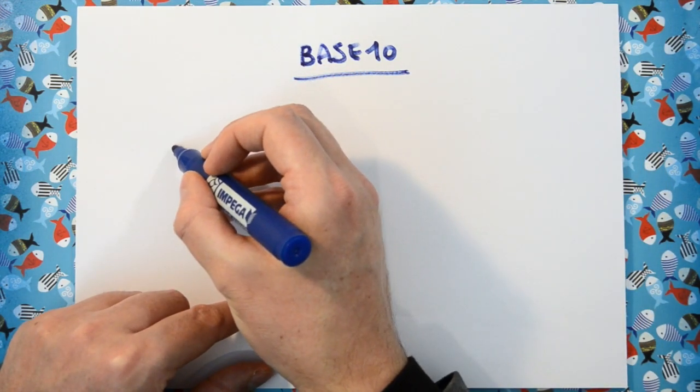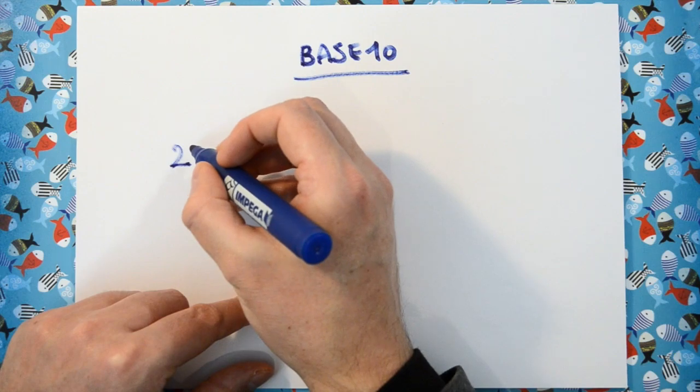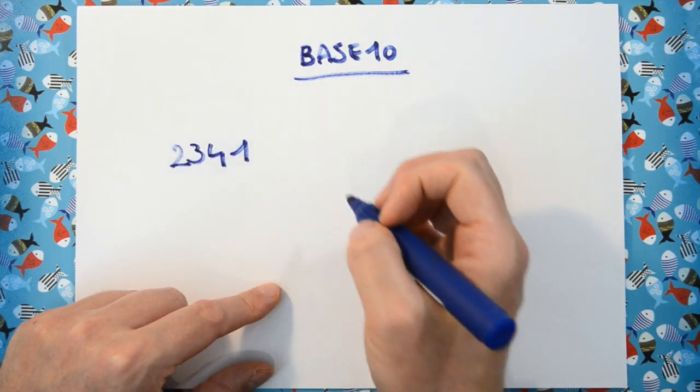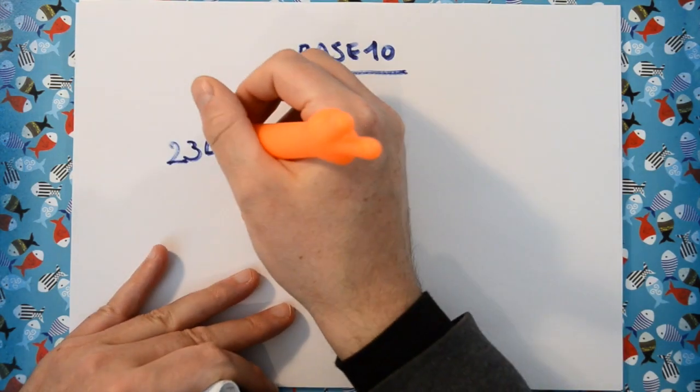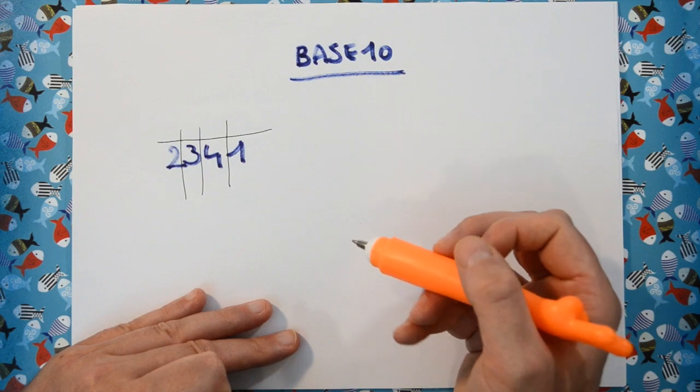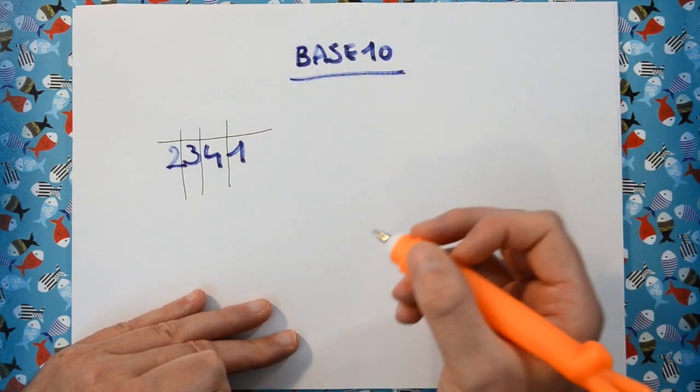Let's take the number 2,341. Now numbers in base 10 work the same as binary numbers, but instead of 2, we're going to use 10.